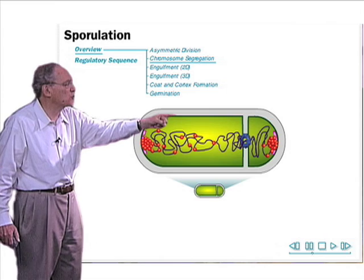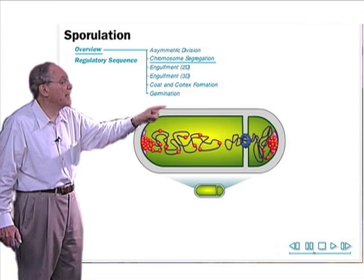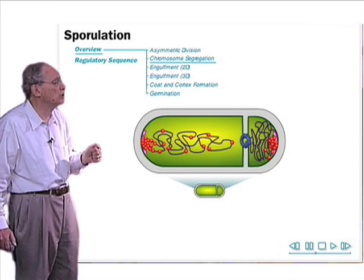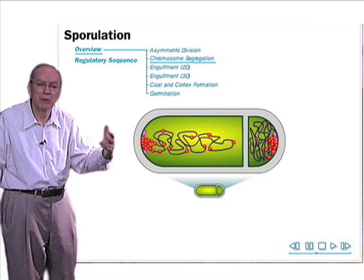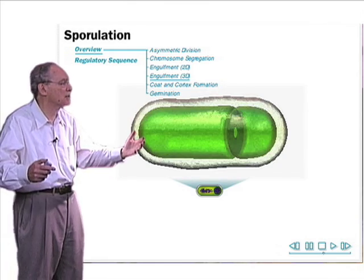and the DNA translocase, located in the division septum, pumps the remainder of the four-spore chromosome into the small chamber of the sporangium, so that when this process is complete, we have two cells that lie side by side. Each has a complete chromosome.